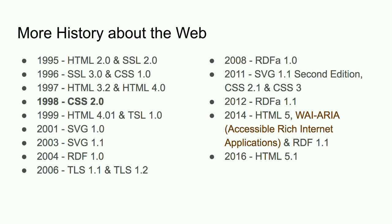I want to put in context how much the web has changed. How many people were developing websites in 1995? It's changed so much. SSL 3.0 was implemented in 1996. In 1998 — the same year Section 508 was implemented — we were just dealing with the release of CSS 2.0. In 1999 we had HTML 4.01, SVG, RDF, TLS security layers, RDF-A. A lot of these technologies changed over time as the industry found ways to meet consumer needs and create more dynamic, inclusive technologies.